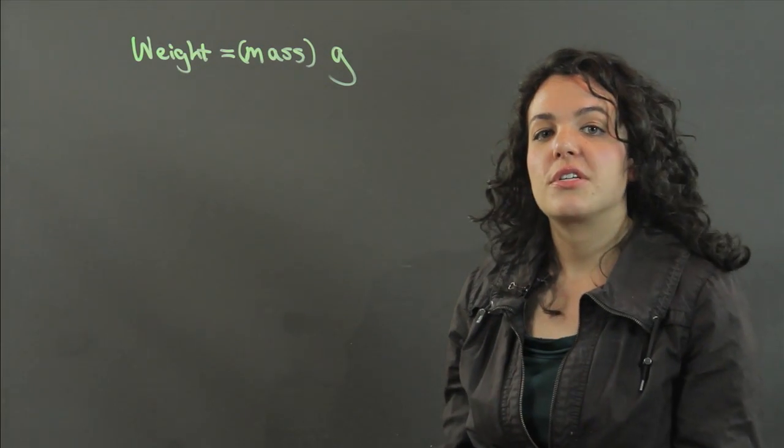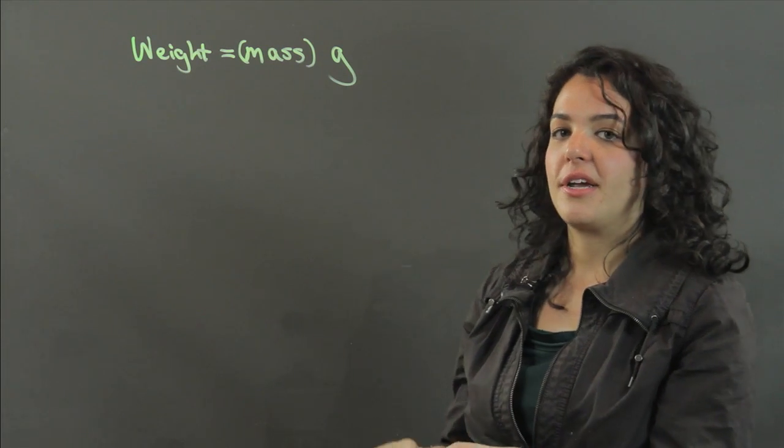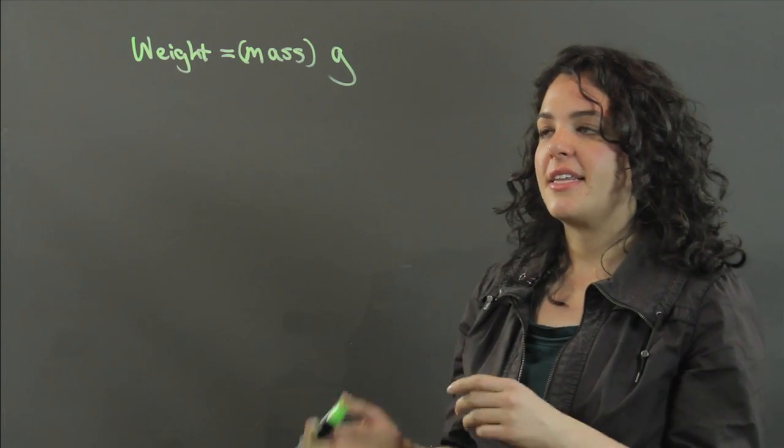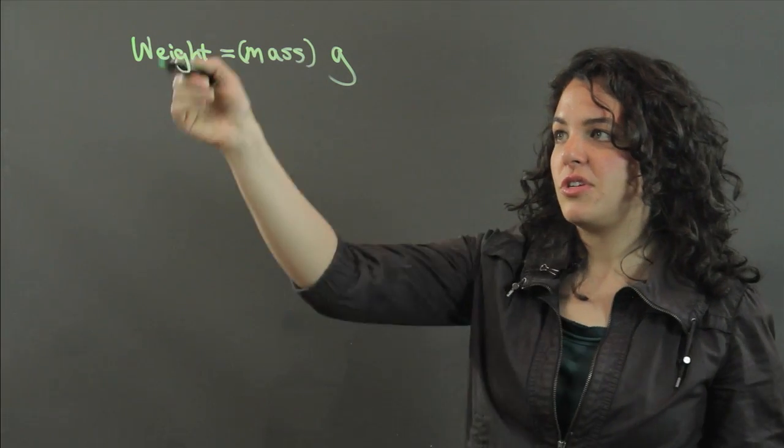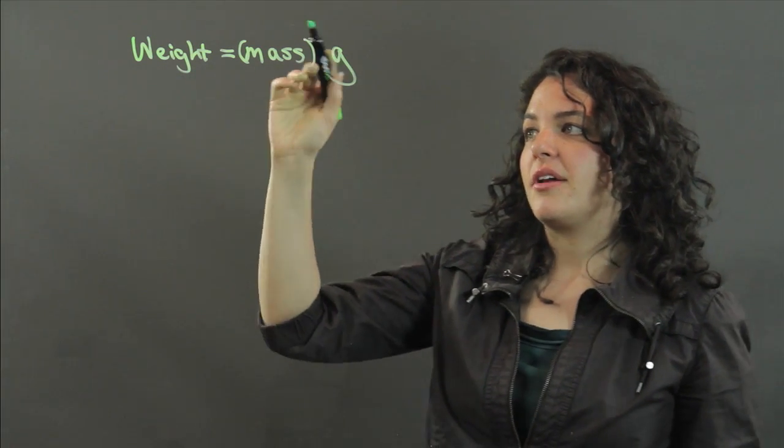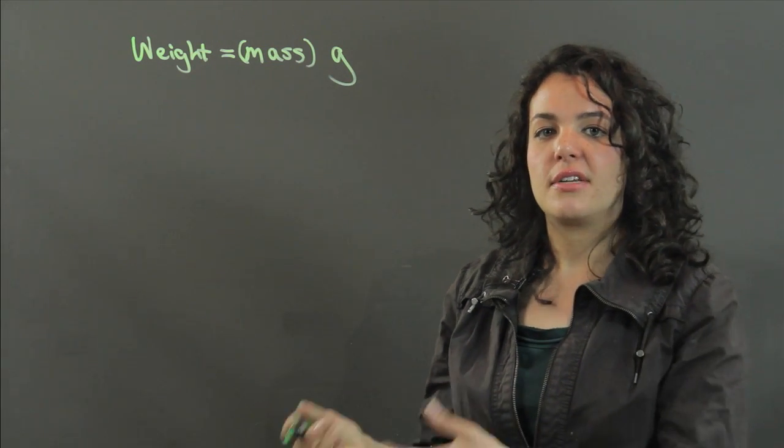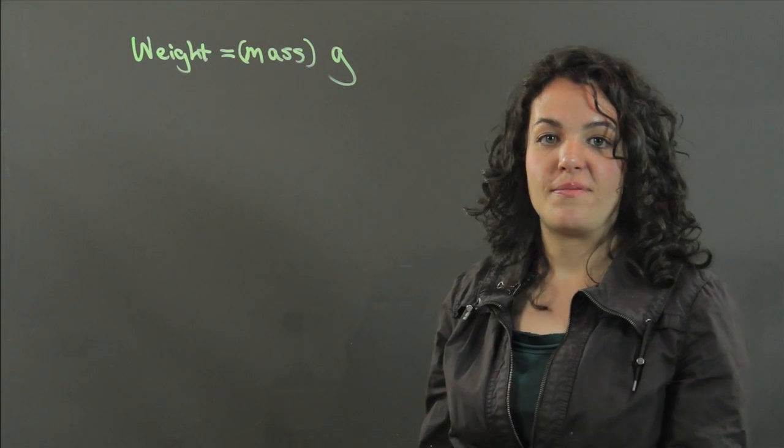But if you have a kitchen scale, it'll weigh what you're putting in, and then it takes that and converts it to mass. It uses this relationship and converts the number to what the mass is. So you'll get kilograms, which is a unit of mass.